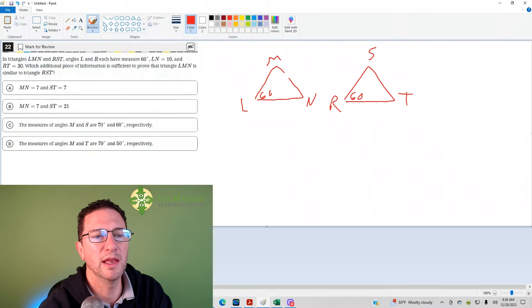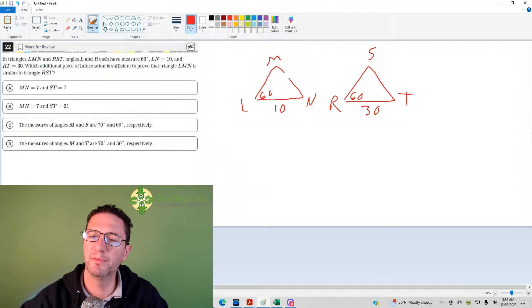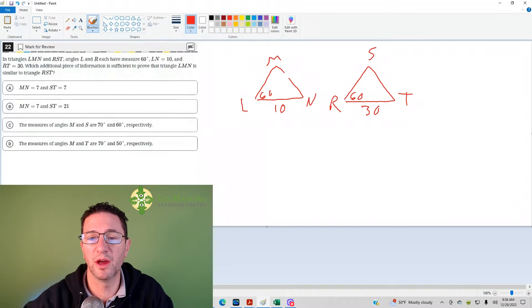Okay, LN is 10, RT is 30. So you can see, if these are - what I'm thinking here might be what you're thinking. Are they similar triangles? Well, we don't have enough to prove them to be similar triangles yet. But we do have two corresponding angles that are equal to corresponding sides that are - one is three times the other. So I want to keep that in mind and make a mental note of it.